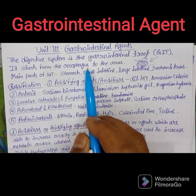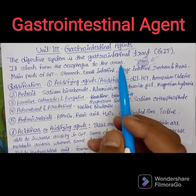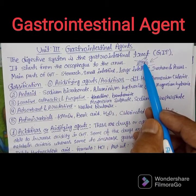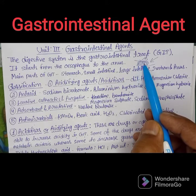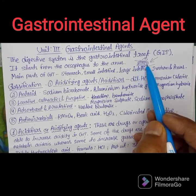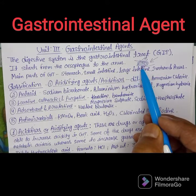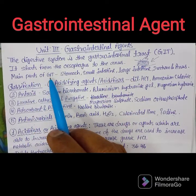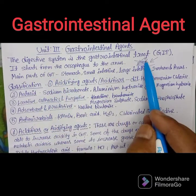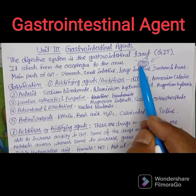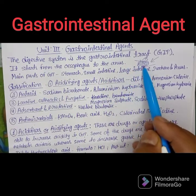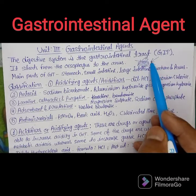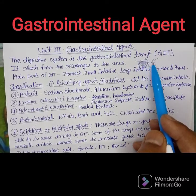The gastrointestinal tract starts from the esophagus to the anus. When we talk about the GIT, there is the stomach, then the duodenum, jejunum, esophagus, small intestine, large intestine, rectum, and anus. The main parts are the stomach, small intestine, large intestine, rectum, and anus.